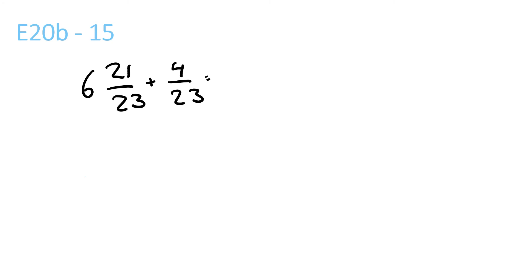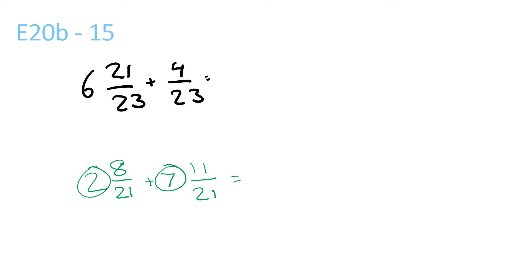2 and 8 over 21 plus 7 and 11 over 21: 7 plus 2 is 9. And 8 plus 11 over 21 gives 9 and 19 over 21.